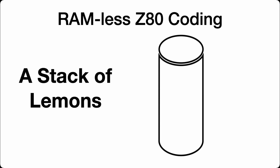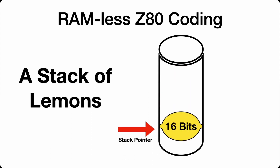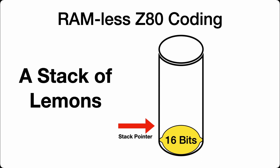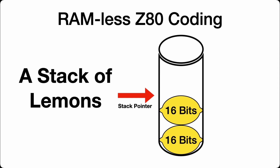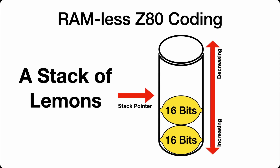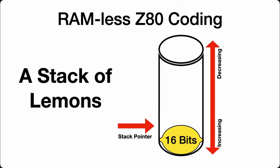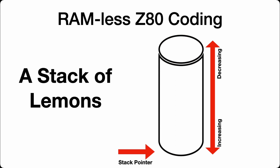Let's have a look at the basic principles of the stack. Let's say we've got a stack of lemons and there's a tube where the lemons go into. In order to remember where the top of the stack is you need some sort of pointer — that's the stack pointer, one of the CPU registers. Each bit of data that goes onto the stack is 16 bits or two bytes. Think about it as an upside-down tube of lemons — the stack pointer actually decreases by two bytes every time something goes onto the stack. When popping lemons off, the stack pointer increases.